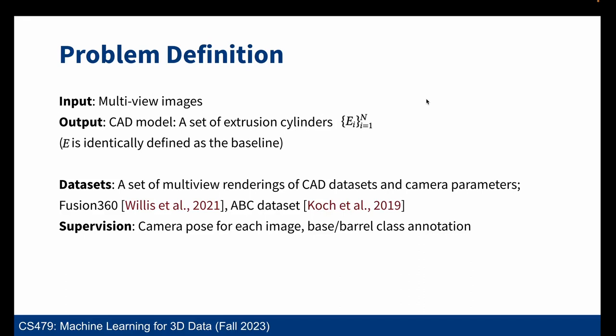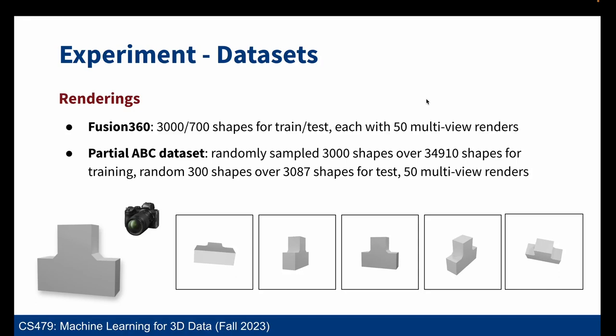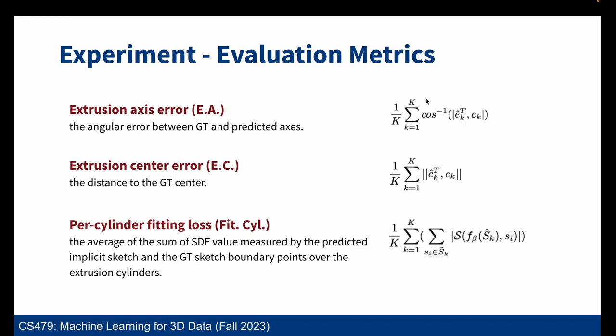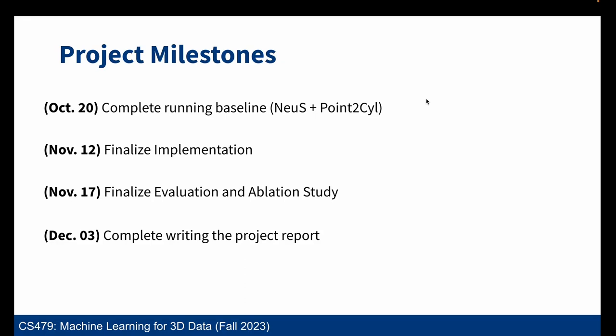To evaluate our model, we have three metrics: extrusion axis error, extrusion center error, and per-cylinder fitting loss. Our success condition is to outperform naive point cloud-based reconstruction. As a future plan, we will first obtain the baseline comparison metric within this month. Within November, we aim to complete implementation, evaluation, and ablation study. Afterward, we aim to refine and finalize our project. Thanks for listening.